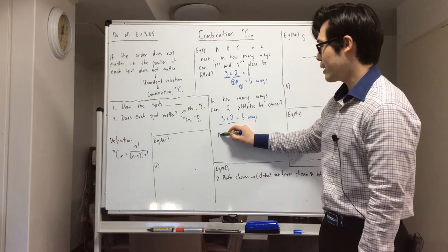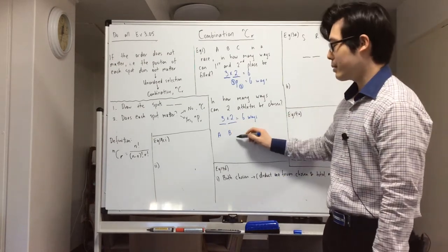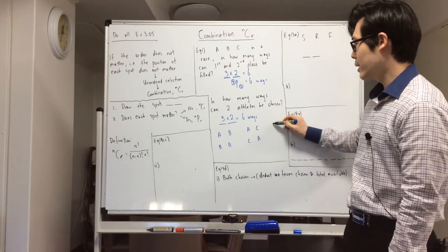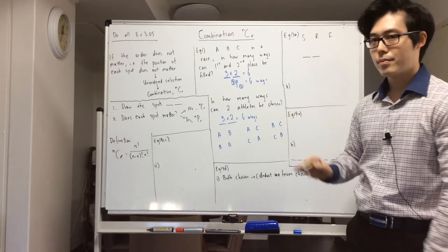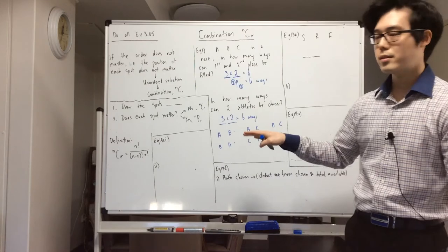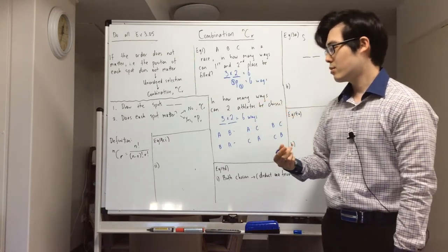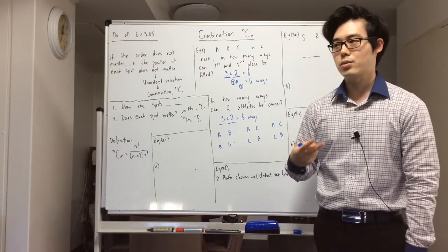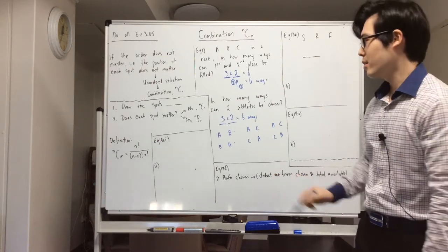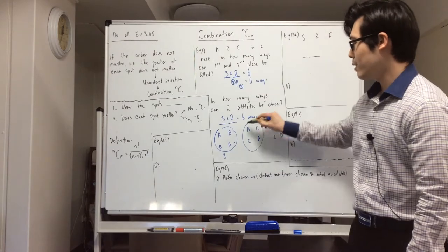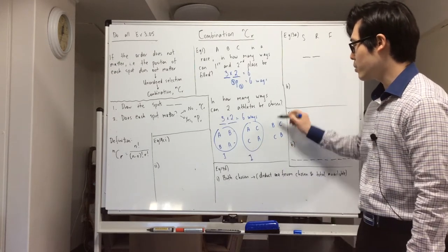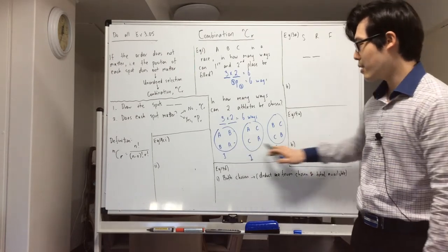With three people A, B, C, I can have AB or BA chosen, AC or CA, BC or CB. In this scenario, choosing A and B is actually the same thing as choosing B and A, because the question asks how many ways can two athletes be chosen. It doesn't matter which order you get those people as long as you get A and B — that's considered one way. Same with AC and BC. So there are actually three ways, not six ways.